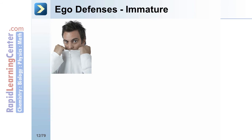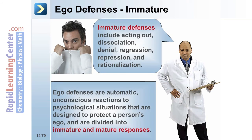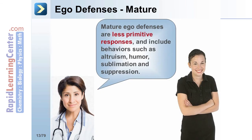Ego defenses are automatic, unconscious reactions to psychological situations that are designed to protect a person's ego, and are divided into immature and mature responses. Immature defenses include acting out, dissociation, denial, regression, repression, and rationalization. Mature ego defenses are less primitive responses and include behaviors such as altruism, humor, sublimation, and suppression.